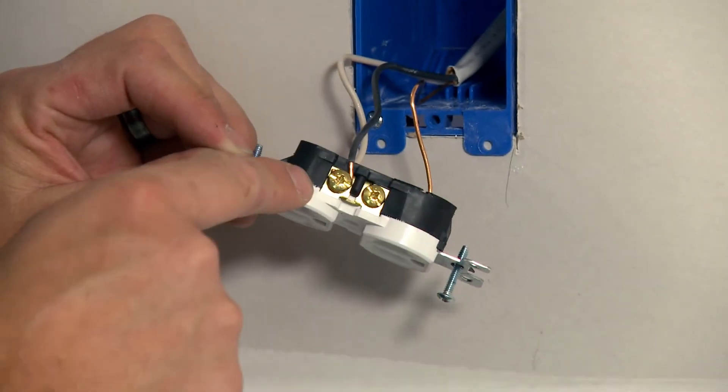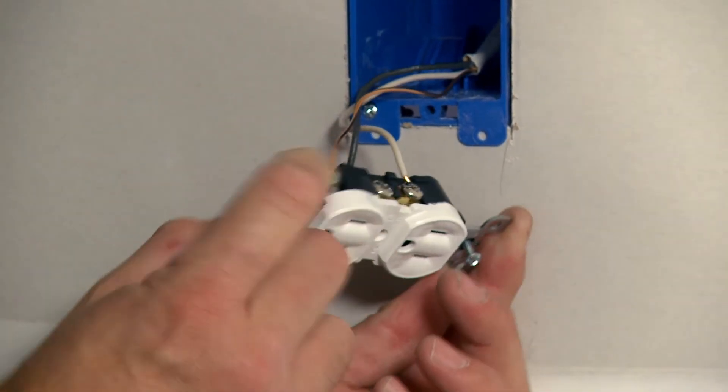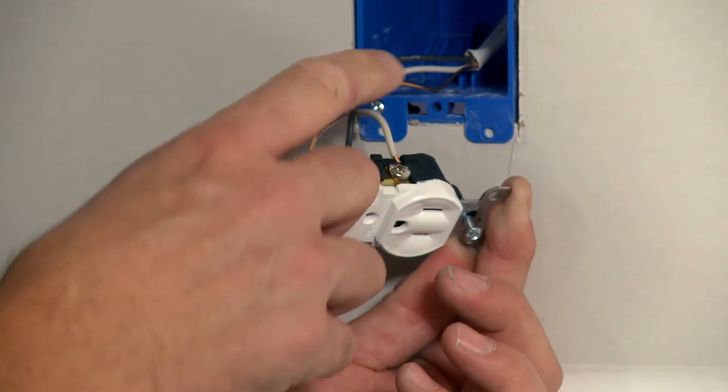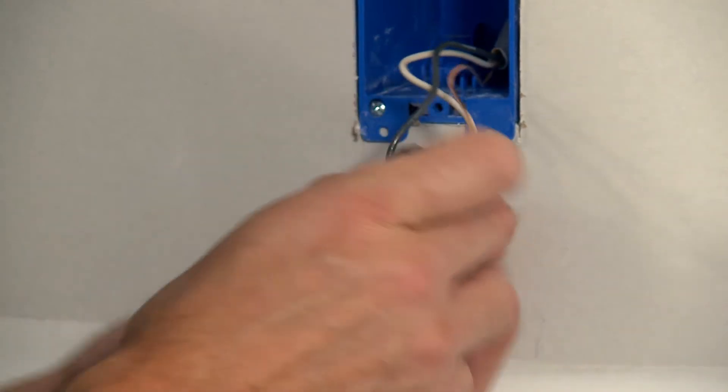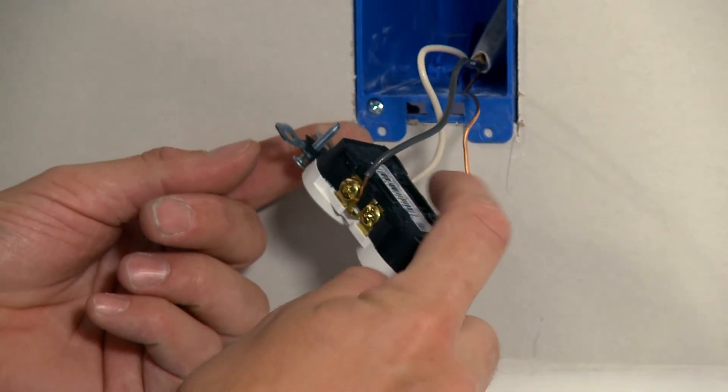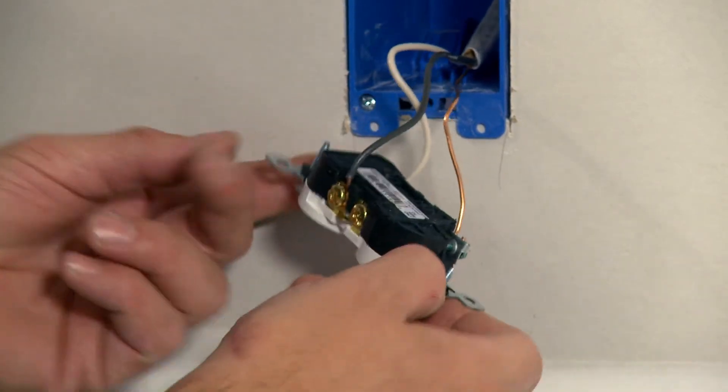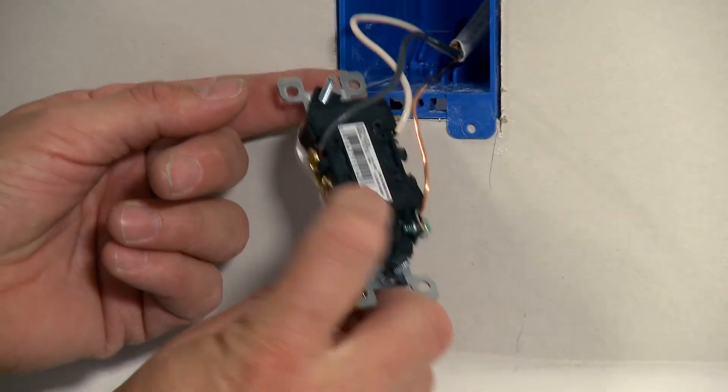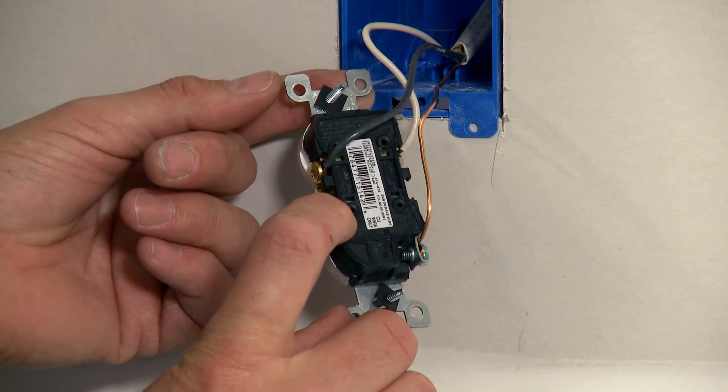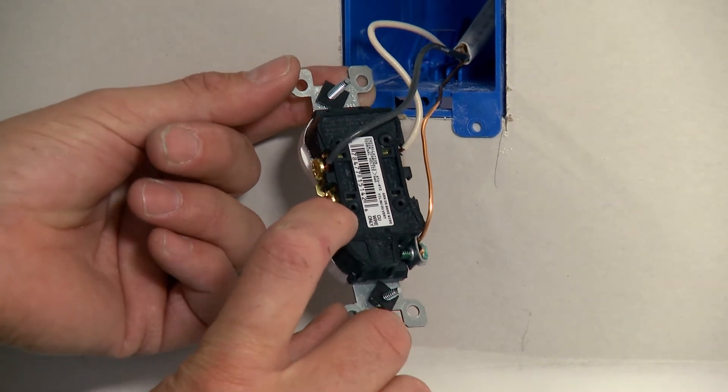We've got our hot coming in on the gold. We've got our ground over here. It's green in color. We've got the neutral coming to the white. The back of the outlets are also labeled white and black or white and hot, sometimes neutral and hot, but they're all labeled. You can see, hopefully, these small holes. Can you guys see those by my finger?